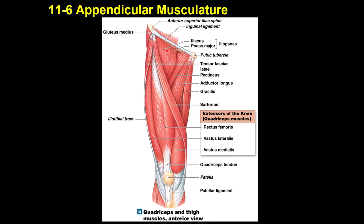The iliopsoas passes below the inguinal ligament, which runs from the anterior superior iliac spine to the pubic tubercle. Sartorius is the longest muscle and causes flexion of both the hip and knee. The quadriceps group causes extension of the knee and includes rectus femoris, vastus lateralis, vastus medialis, and vastus intermedius — the last is deep to rectus femoris.